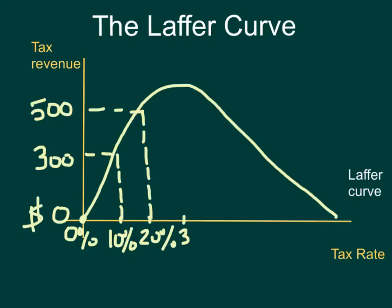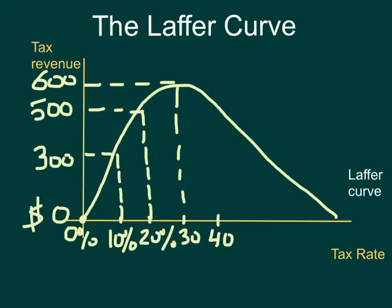The same thing goes for 30%, where, as you can see from the curve, the total tax revenue for the government is actually at a peak — let's say $600 billion. Now, if the rate gets much higher, say 40%, because of the high tax rate, a lot of people lose the incentive to work. Maybe businesses are not as profitable, and they will lay off certain workers.